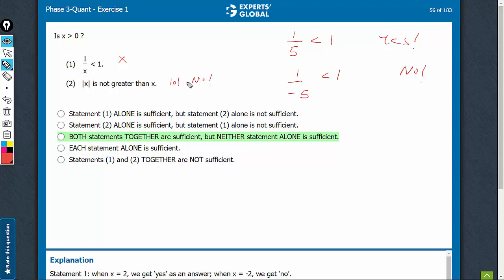And for all the positive values 1, 2, 1.5, etc., we will get yes as an answer. So for 2, let's say the answer is yes. For 0, the answer is no. And therefore, statement 2 is also not sufficient.